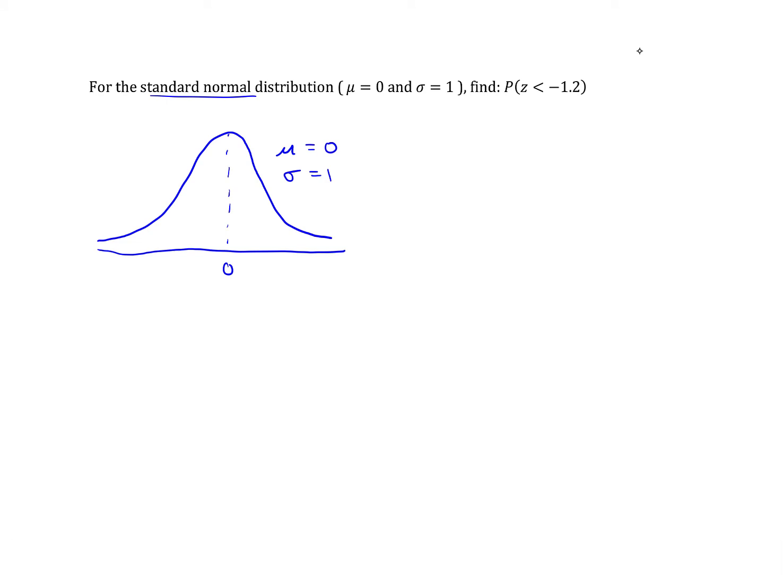The value in question is negative 1.2, which is somewhere lower than 0. Now I want the area to the left of this because that's less than negative 1.2, so I'm going to shade to the left.